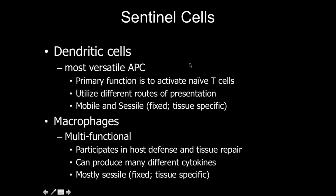The primary antigen-presenting cells are dendritic cells — these are the most versatile antigen-presenting cells. While macrophages and B-cells also function as antigen-presenting cells, dendritic cells have basically just one job, and that is their one job, whereas macrophages and B-cells have other jobs which we'll talk about later.